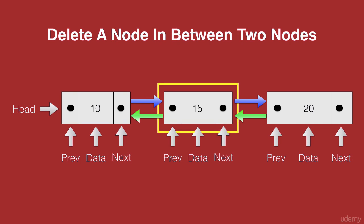We first need to traverse the list until we reach the node which we want to delete, and then we need to change the pointers of the node previous to this and the node after this. The next pointer of the node previous to this should point to the next node of this node, and the previous pointer of the next node should point to the previous node of this node.